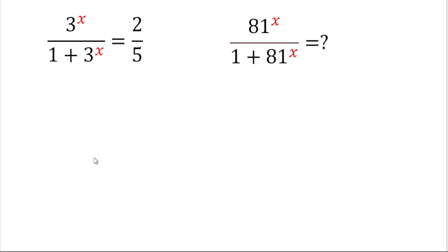Hello friends, welcome back again. Today in this video we are going to solve this rational equation. The problem here is: 3 to the power x divided by (1 plus 3 to the power x) equals 2 by 5. We will have to find the value of 81 to the power x divided by (1 plus 81 to the power x).